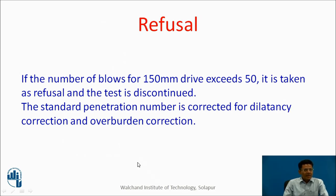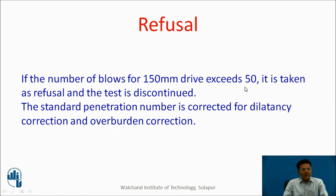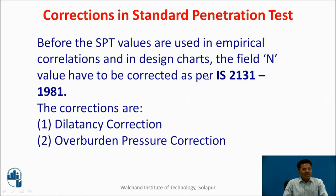Sometimes the number of blows for a 150 mm drive exceeds 50; this is treated as a refusal and the test is discontinued. The standard penetration number is corrected for dilatancy correction and overburden correction when within acceptable limits. If it exceeds 50, the test is not continued. Before SPT values are used in empirical correlations and design charts, the field N value must be corrected as per IS 2131-1981. There are two types of corrections: dilatancy correction and overburden pressure correction.